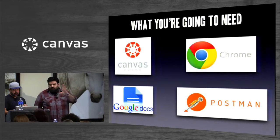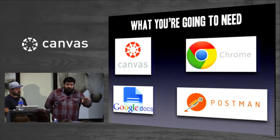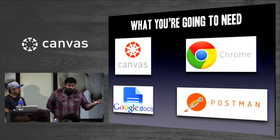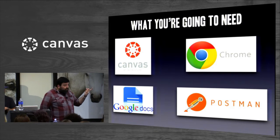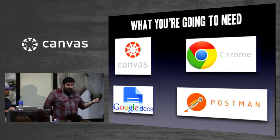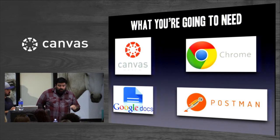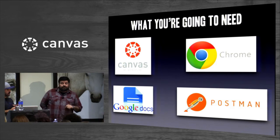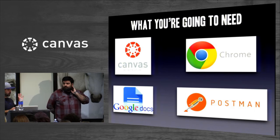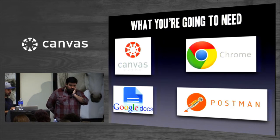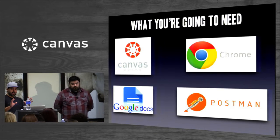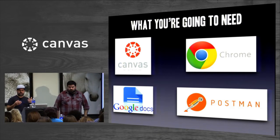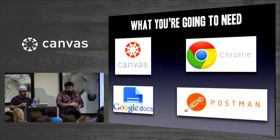Chris is going to do a live demonstration later where he'll touch on all of these things. Basically, it's access to a Canvas system, obviously, Google Chrome, Google Docs, and Postman, which is an app available in the Chrome Web Store. Postman has a free version, but if you do a $9 upgrade, you're able to automate pretty much the entire interface. This is where, without a lot of programming skill, you're going to be able to do multiple things multiple times.